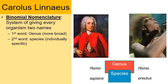On the left we have sapiens, on the right we have erectus. Combining genus and species, humans are Homo sapiens and the other is Homo erectus. These are the scientific or binomial names.